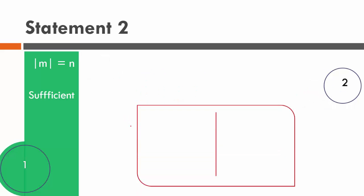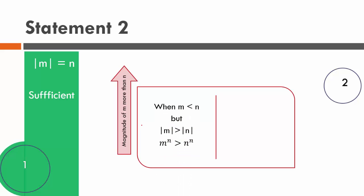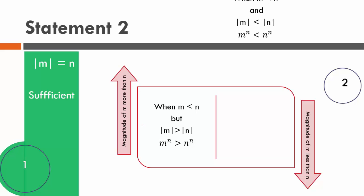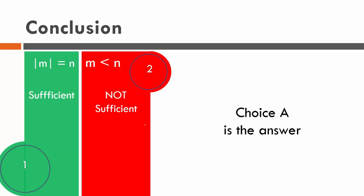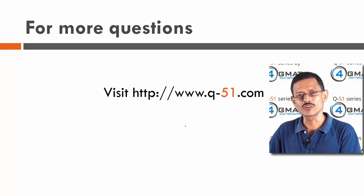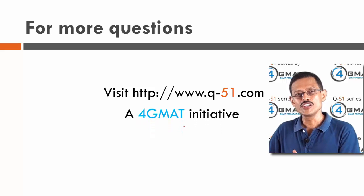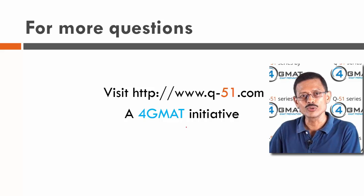Statement 2 is not sufficient. The key insight: when the magnitude of m is greater than the magnitude of n, m power n can exceed n power n; when the magnitude of m is less than n and m is also less than n, the answer goes the other way. So Statement 1 is sufficient, Statement 2 is not sufficient — answer choice A is correct. For more questions like this, visit www.q-51.com, a 4GMAT initiative. Share with friends and send feedback to info@4gmat.com.